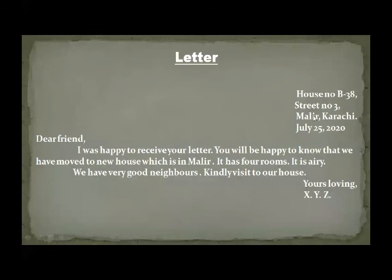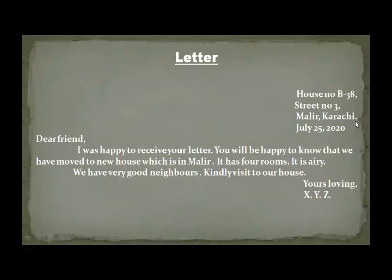The starting pattern: house number, street number, address, then date. My house number is B-38, comma. Street number 3, comma. Malir, comma, Karachi, full stop. Then today's date: June 25th, 2020. You start the letter from the right-hand side by writing the house number, street number, address, and then today's date.